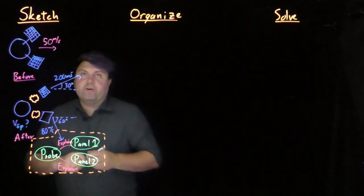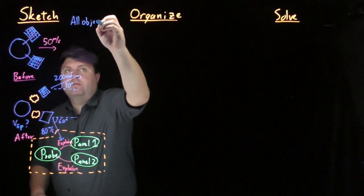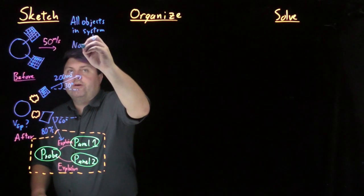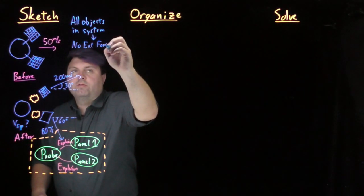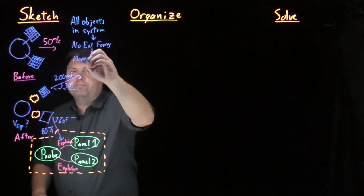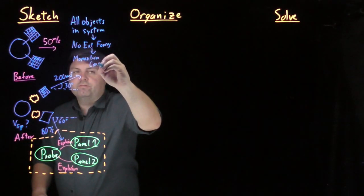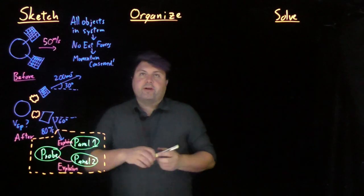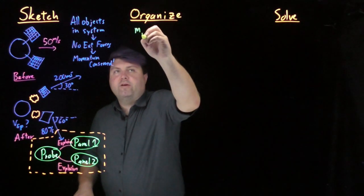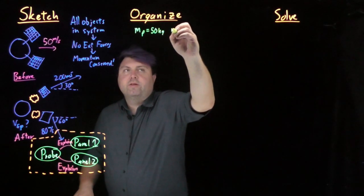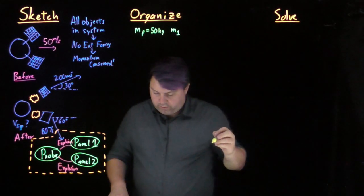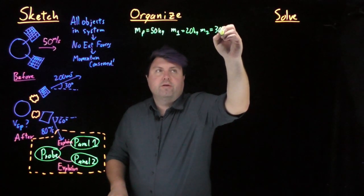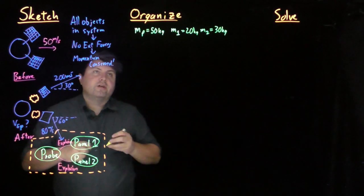So if we do this then we have all objects are in our system, which means that we have no external forces, which means that momentum is conserved. So in our organize we're given a couple of things to know. The mass of the probe is 50 kilograms, the mass of panel one is 20 kilograms, the mass of panel two is 30 kilograms, and we're given these velocities.